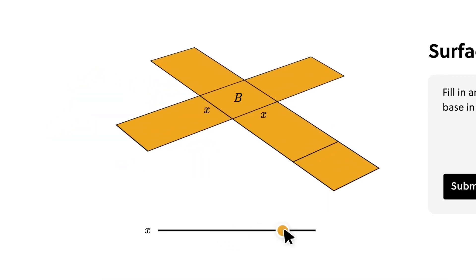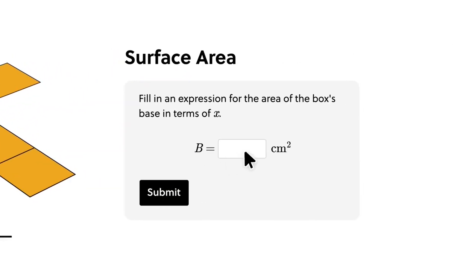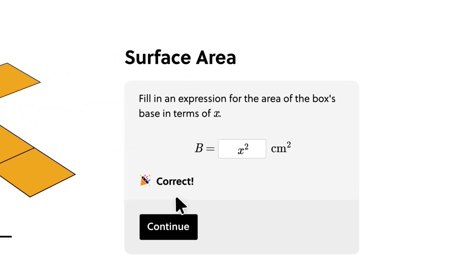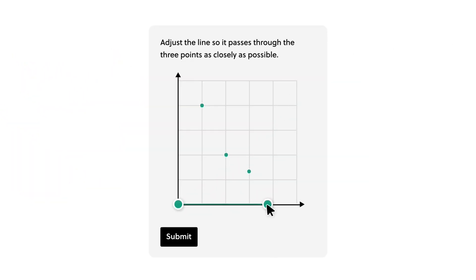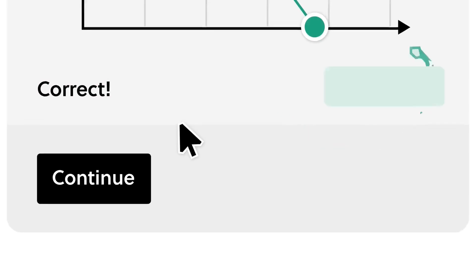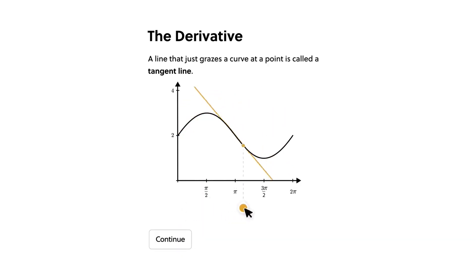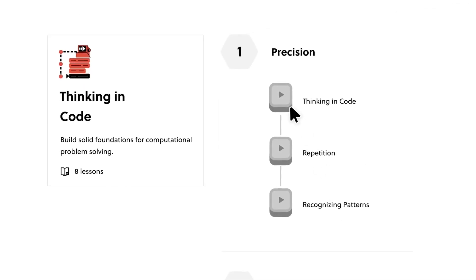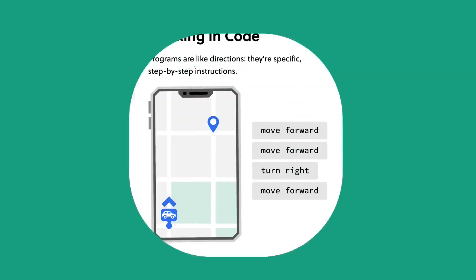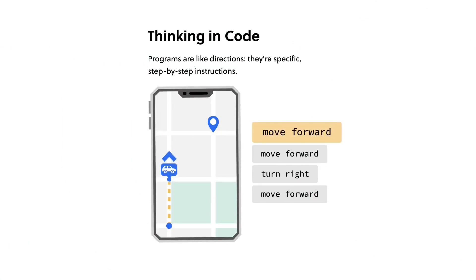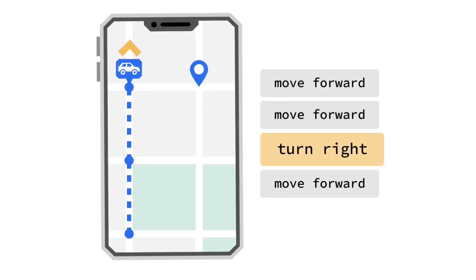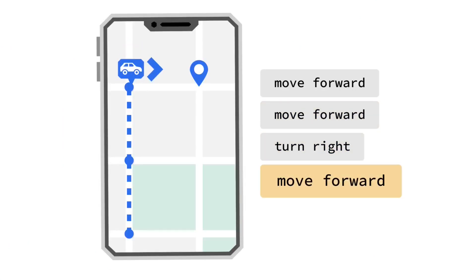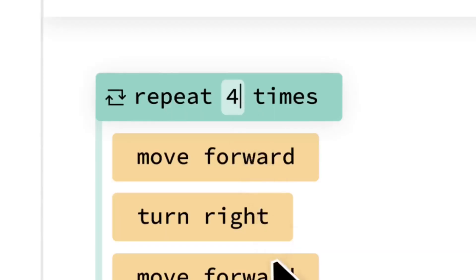Brilliant already has a ton of lessons and new lessons are being added every month, so you'll never run out of new stuff to learn. And Brilliant is accessible for everybody — it customizes the content to fit your needs. So whether you're a pro or a beginner, Brilliant has you covered. You can take a quick quiz when you sign up and you'll be matched with content that fits your needs and skill level. No matter what platform you're using, you can always use Brilliant — it works on phones, tablets, and PCs.